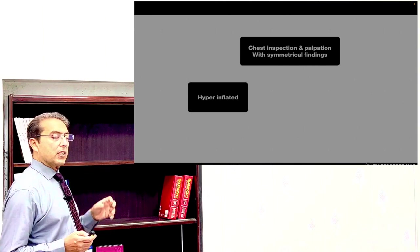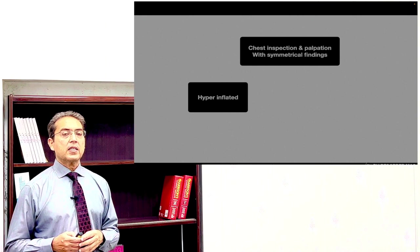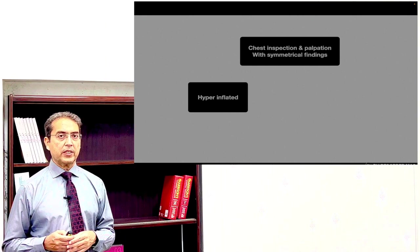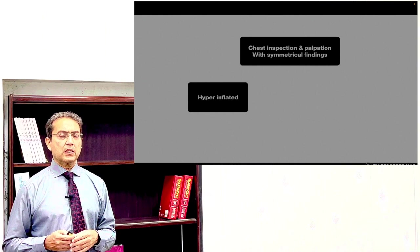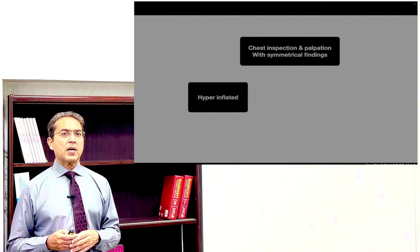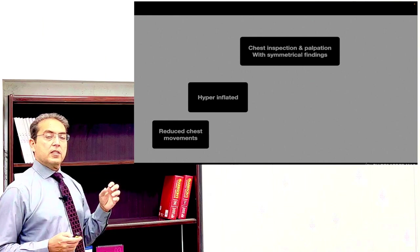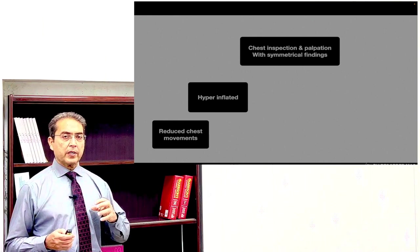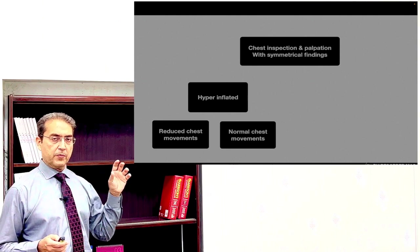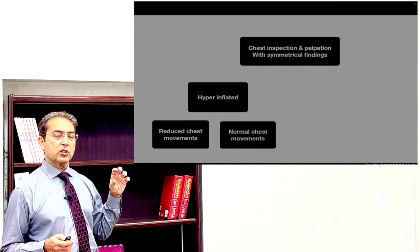We assess whether the chest is hyperinflated or not. With hyperinflation, you can see that the distance between the Adam's apple and the suprasternal notch is decreased, and the anteroposterior and transverse diameters become equal. So the chest is either hyperinflated or not. If hyperinflated, chest movements overall may be reduced or normal.